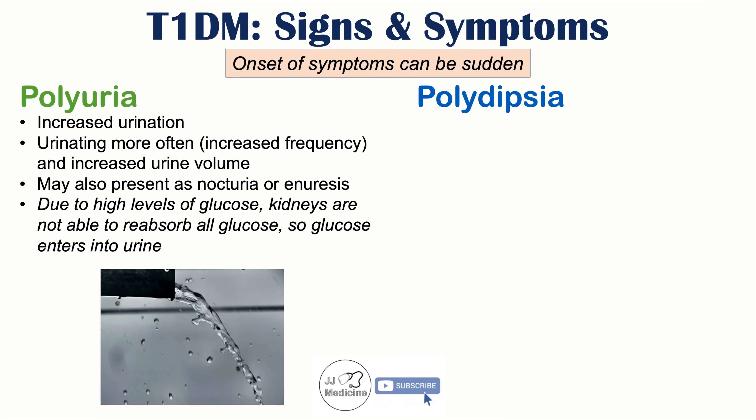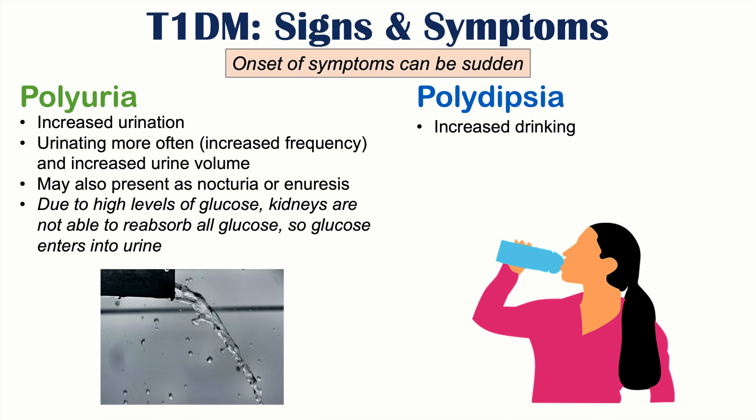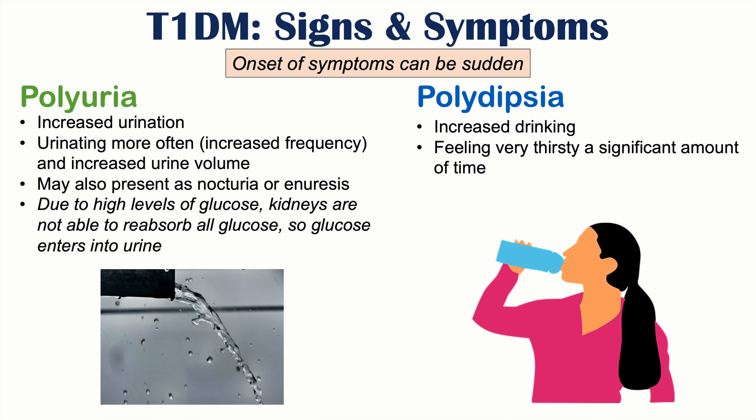Polydipsia is also a related finding — this is increased drinking, where patients feel very thirsty for a significant amount of time. The reason is because of all those increased urine losses. Because they are losing so much fluid volume, they feel very thirsty and drink a lot of fluids to compensate.